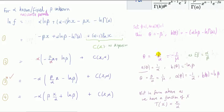We can tidy this up even more — this is the more common representation, so I'll put a star by it. It's a third form obtained by pulling out a minus from both terms. In this case theta is 1 over mu, a is a function of the dispersion parameter, which by definition is greater than zero, so this function will be minus 1 over the dispersion parameter, and b is log beta. c is everything else.